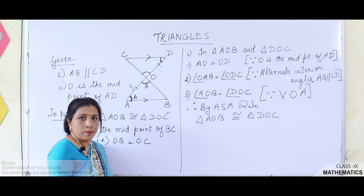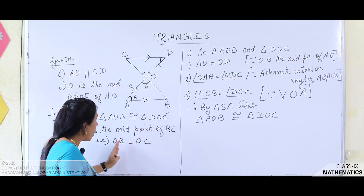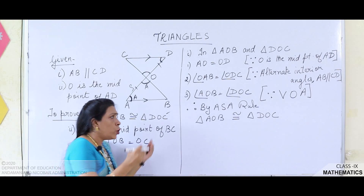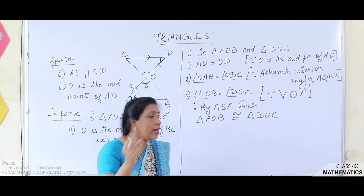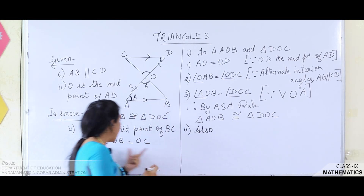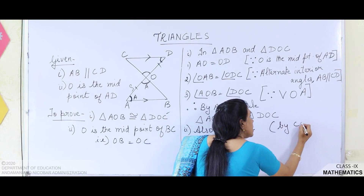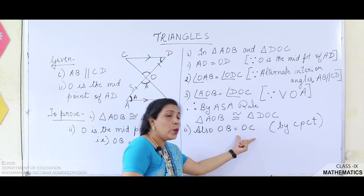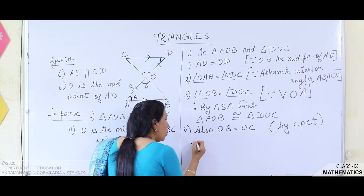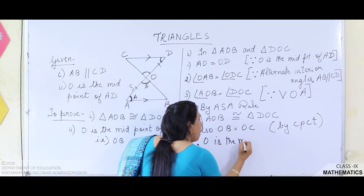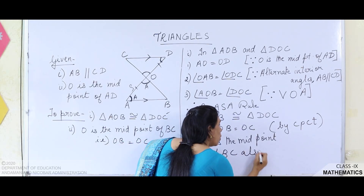We have got the first answer. For the second part, we have to prove O is the midpoint of BC, meaning OB is equal to OC. OB is a part of triangle AOB and OC is a part of triangle DOC. Since we have proved the triangles are congruent, we can directly write OB is equal to OC by CPCT — corresponding parts of congruent triangles. Therefore, O is the midpoint of BC also.